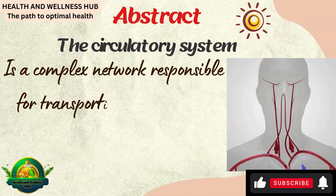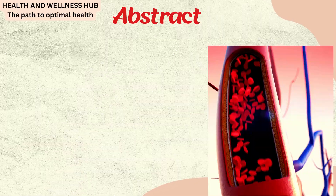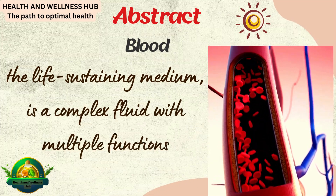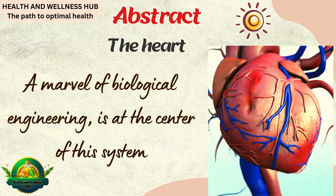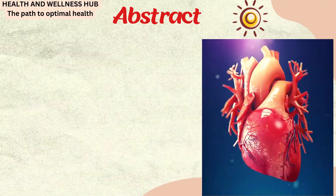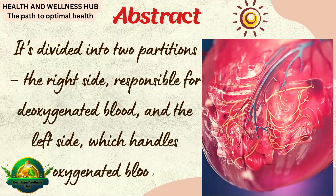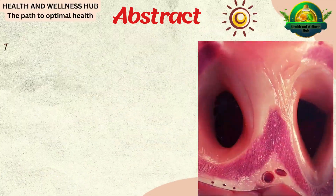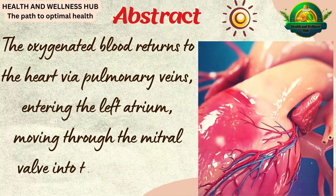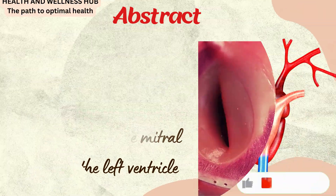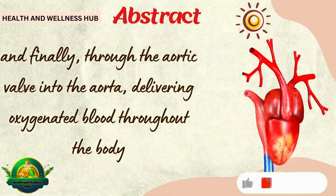The circulatory system is a complex network responsible for transporting oxygen and nutrients to cells and removing waste products. Blood, the life-sustaining medium, is a complex fluid with multiple functions. The heart, a marvel of biological engineering, is at the center of this system, divided into two partitions — the right side for deoxygenated blood and the left side for oxygenated blood. Oxygenated blood returns via pulmonary veins into the left atrium, through the mitral valve into the left ventricle, and finally through the aortic valve into the aorta, delivering oxygenated blood throughout the body.